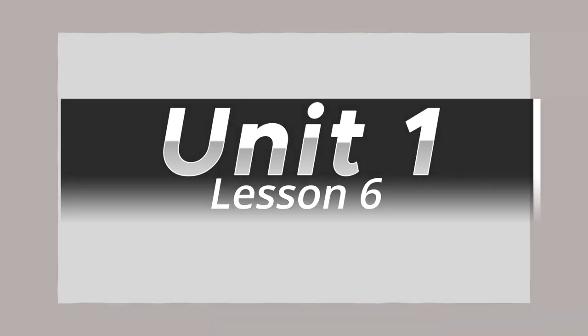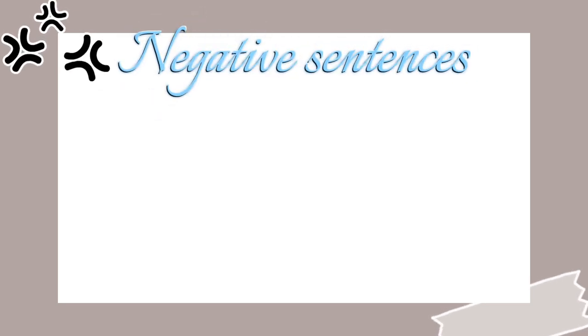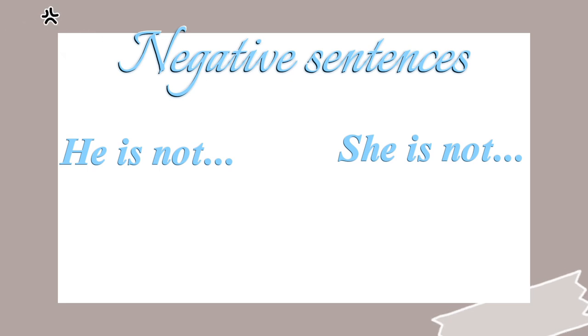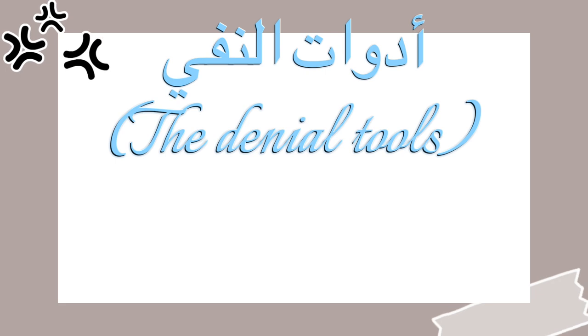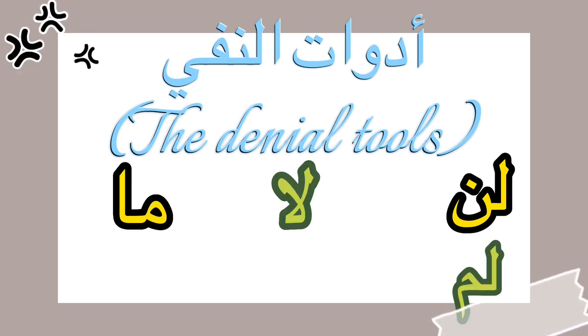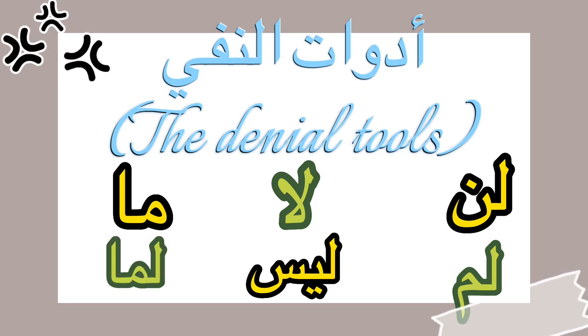Unit one, lesson six. In today's video we are going to learn about the negative sentence — how to say 'he is not,' 'she is not' in Arabic. They are known as Adawat al-Nafi, which literally means the negative or denial tools. We have six Adawat al-Nafi: lan, la, ma, lam, laysa. For today's video we are only going to cover لا and ليس.